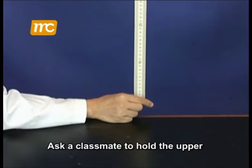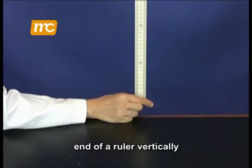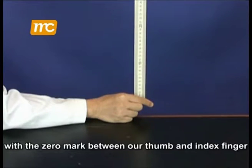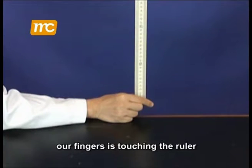Ask a classmate to hold the upper end of a ruler vertically with the zero mark between our thumb and index finger. Make sure that none of our fingers is touching the ruler.